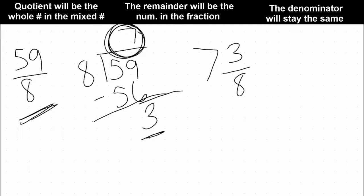When we divide, our quotient at the top is our whole number, the remainder is our numerator, and our denominator will stay the same. So my mixed number is going to be 7 and 3/8. Let's practice another one.